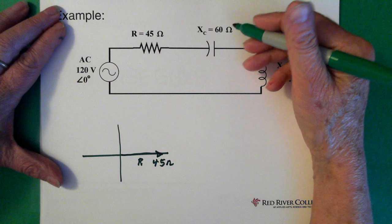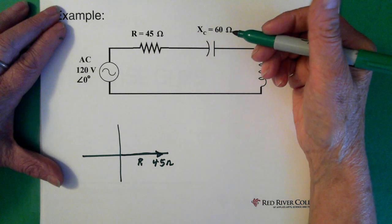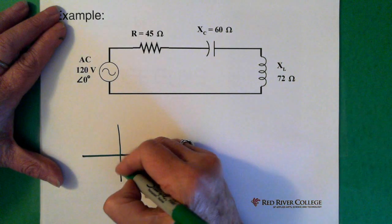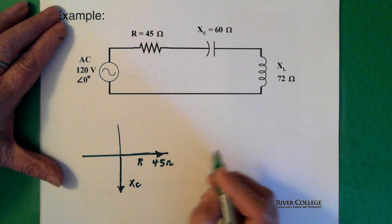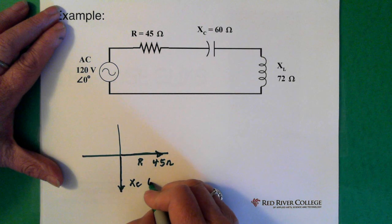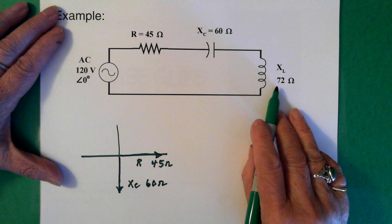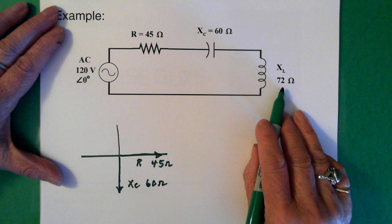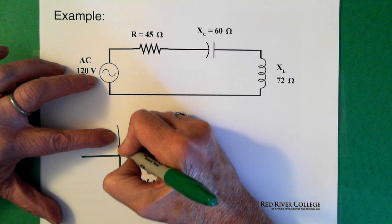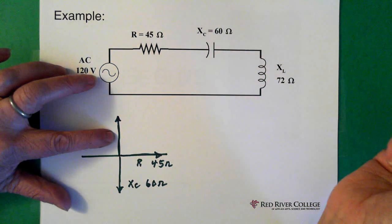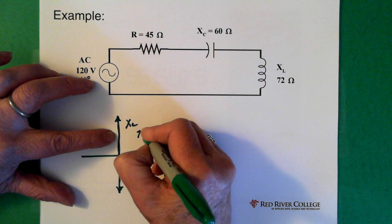My capacitor, or my capacitive reactance, is 60 ohms, and that goes on the y axis in the negative direction. So I go down here, and that's my Xc, and it is 60 ohms. My inductive reactance is 72 ohms, and it goes on the positive y axis. So that's 72 ohms, or the inductive reactance goes up here. So our XL is here, and it's 72 ohms.